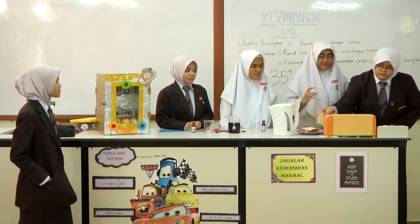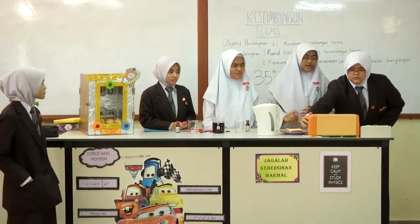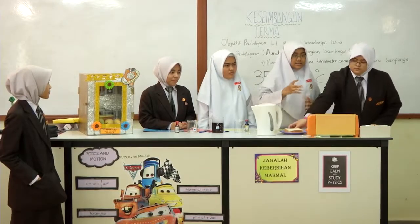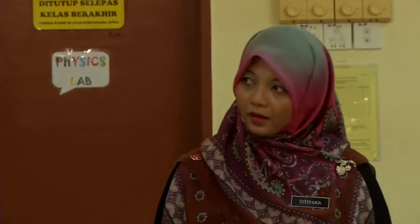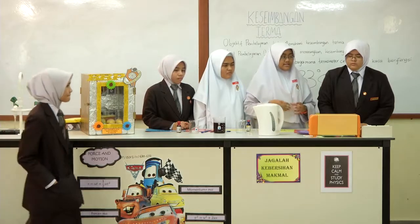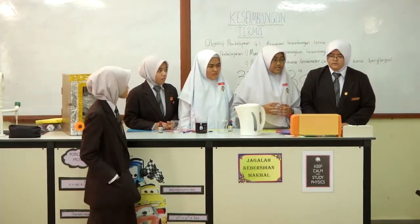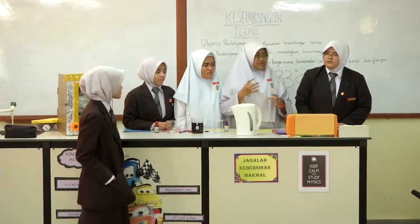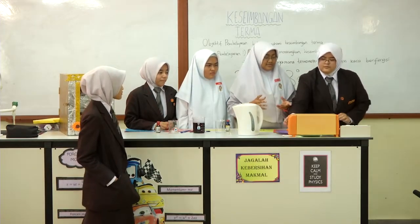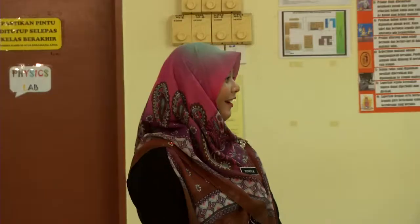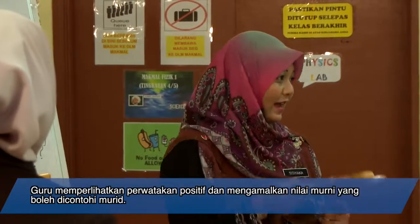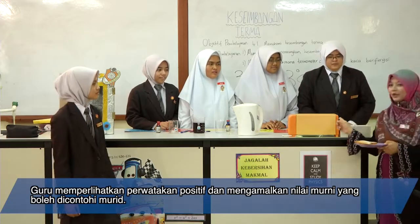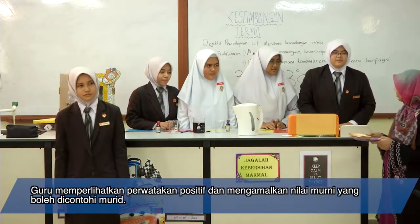Seterusnya adalah tentang pembakar roti. Kami akan letakkan roti di dalam pembakar ini dan bakar. Haba daripada pembakar roti akan dipindahkan ke dalam roti dan menjadikan suhu antara roti dan pembakar roti sama. Akhirnya, keseimbangan terma dicapai dan menyebabkan roti ini masak. Roti kita pun dah masak — roti yang telah masak ini telah mencapai keseimbangan terma kerana suhunya telah sama dengan suhu pembakar roti. Contoh yang bagus bagi kumpulan ini.